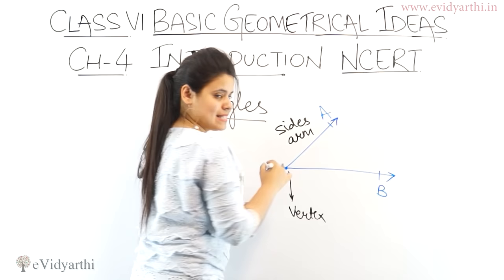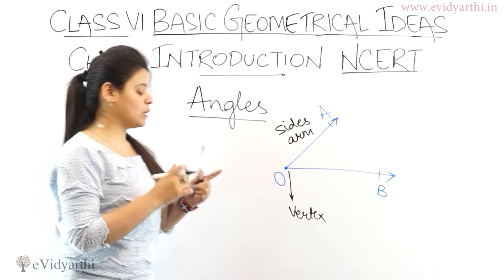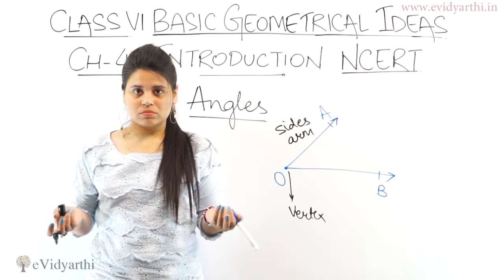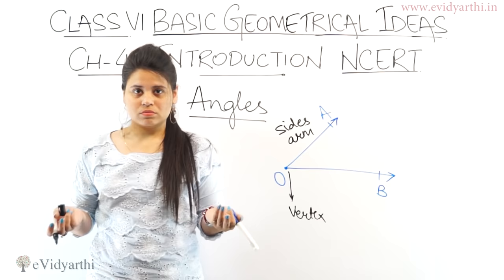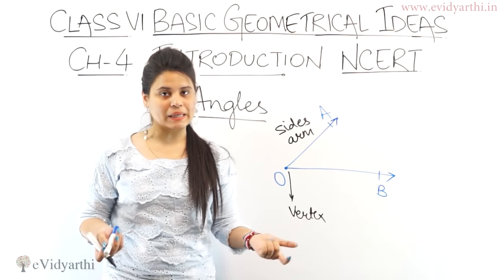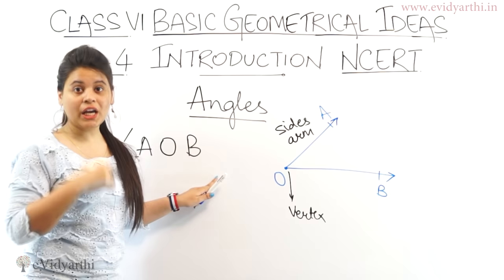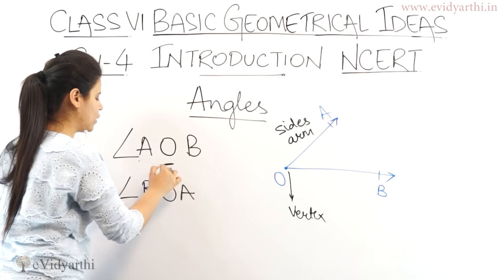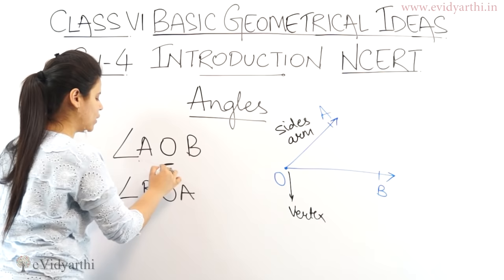If I want to name this angle, how would I say it? It could be A, O, B or B, O, A. When naming an angle, the vertex always goes in the middle. Since three points together form an angle, O goes in the middle. So this is angle AOB. You can also write it as angle AOB or angle BOA — whichever way, O, which is the common point, stays in the middle.